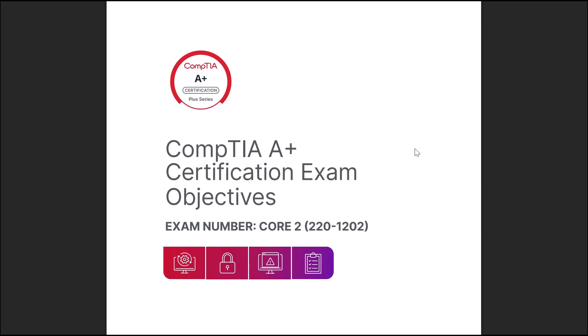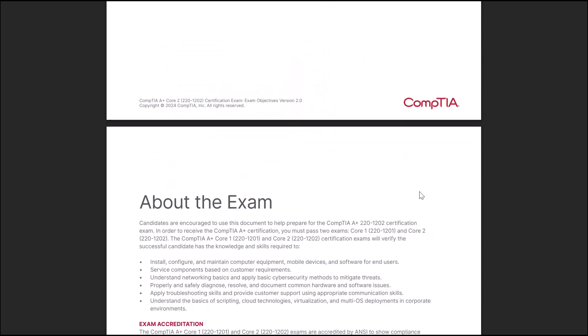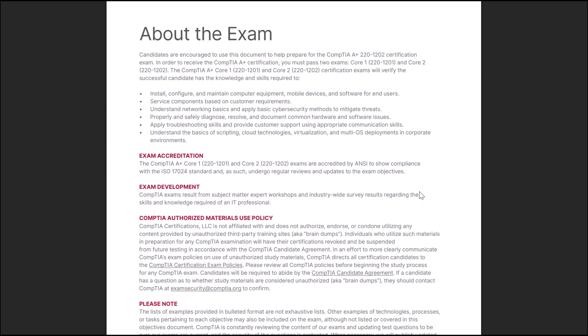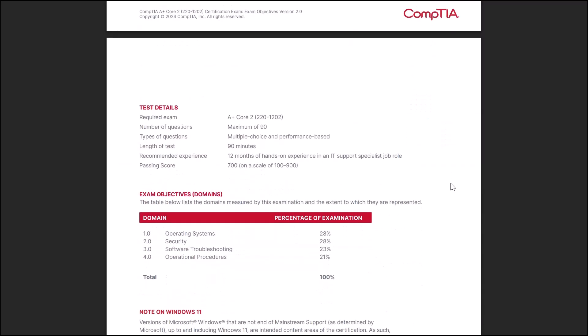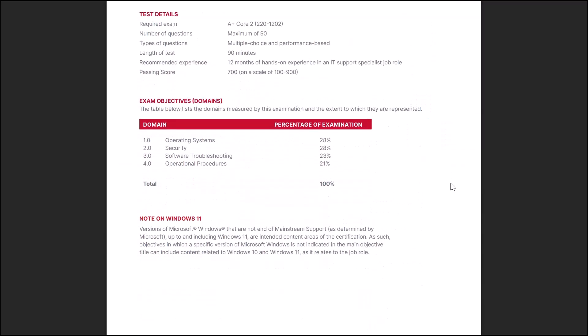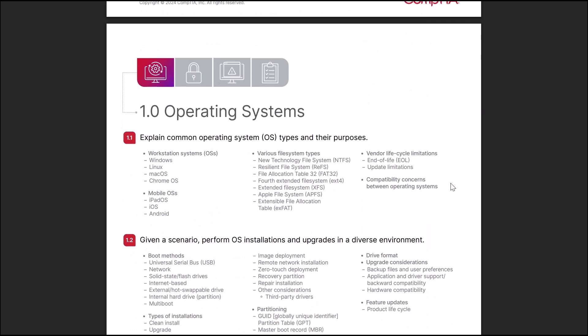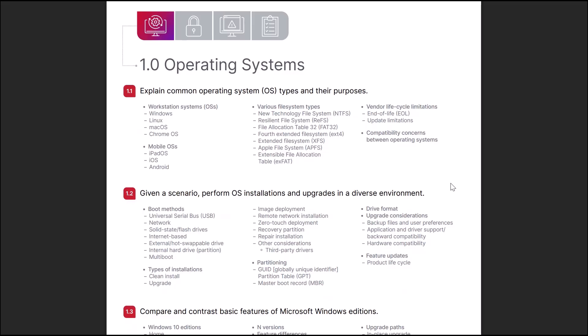This question is a very important one to ask as you prepare yourself for certification. With each official exam release, CompTIA releases their objective list for each certification exam they offer. This list of both main objectives and sub-objectives allows students to understand what topics are being discussed on that particular exam. These objectives are the outlines of the knowledge and skills that are covered in the certification exam, and they serve as the very structure for the entire certification exam.